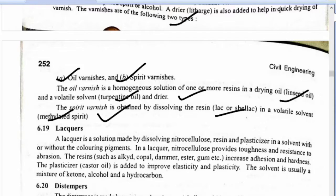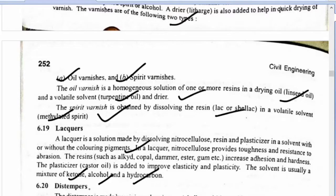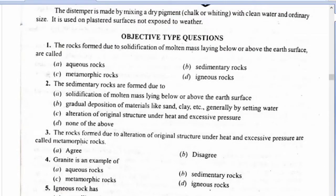Lacquerware (blackware) is a solution made by dissolving nitrocellulose resins and plasticizer in a solvent, with or without coloring pigments. This solvent is usually a mixture of ketone, alcohol, and hydrocarbon. Distemper is made by mixing a drying pigment — chalk or whiting — with clean water and ordinary size. It is used on plastered surfaces not exposed to weather.